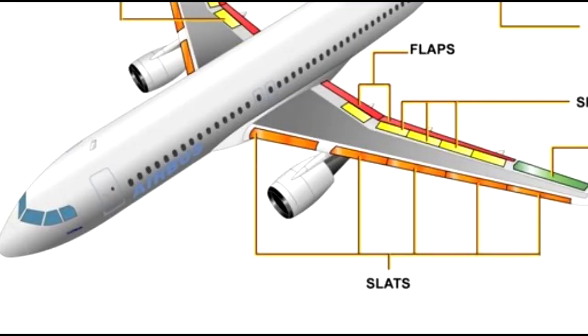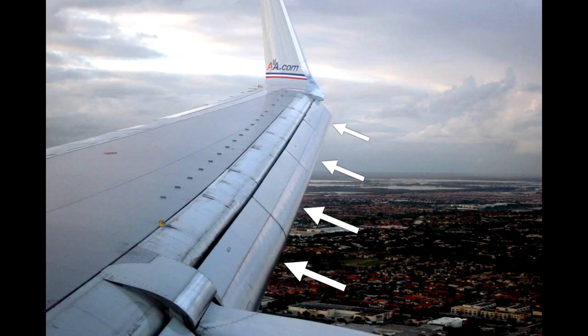Swept-wing jets like the 737 or A320 fly great fast — that's the reason for the sweep, to prioritize speed. But they don't do well flying slow, so manufacturers have to enhance low-speed maneuverability by installing high-lift devices such as leading-edge slats. These slats on the leading edge work similarly to trailing-edge flaps.